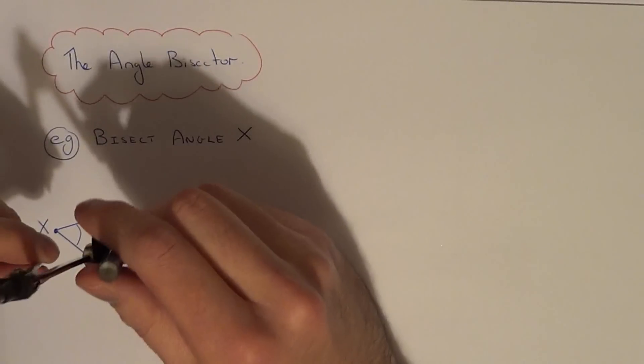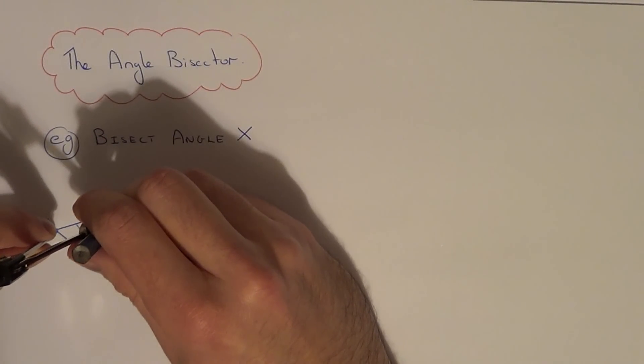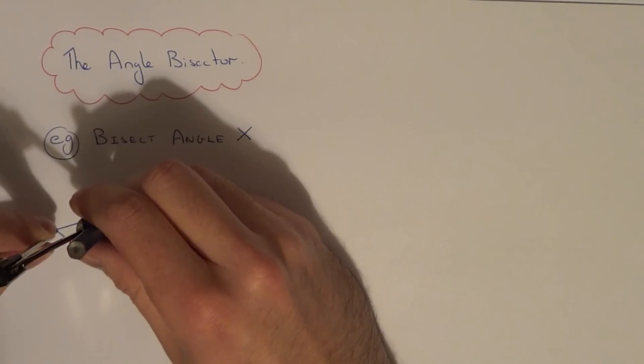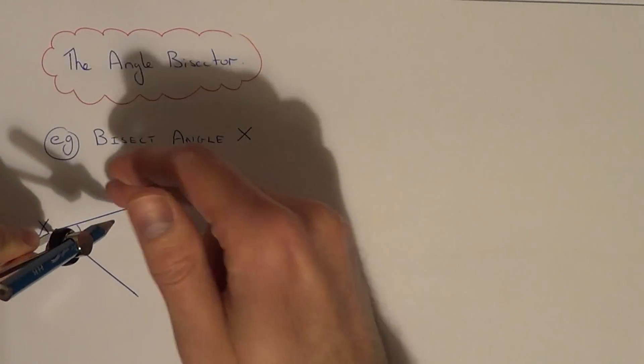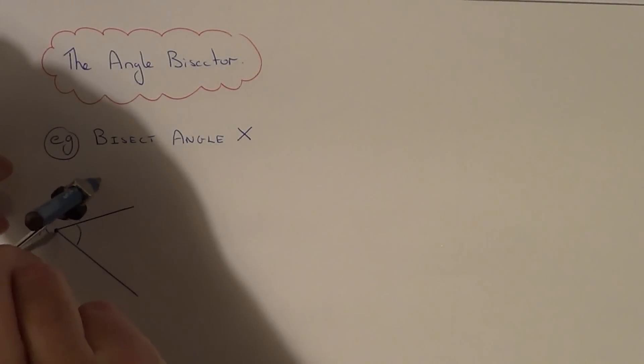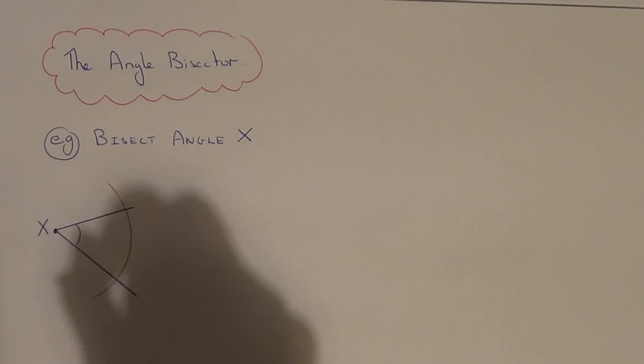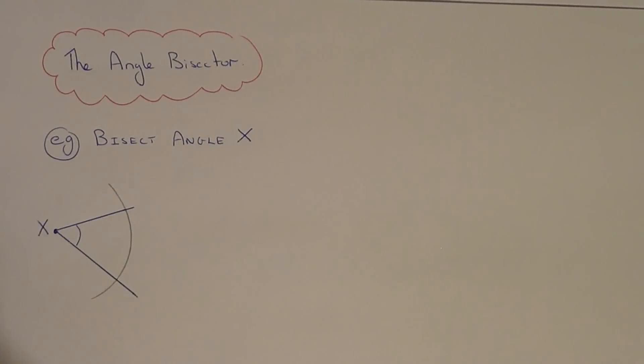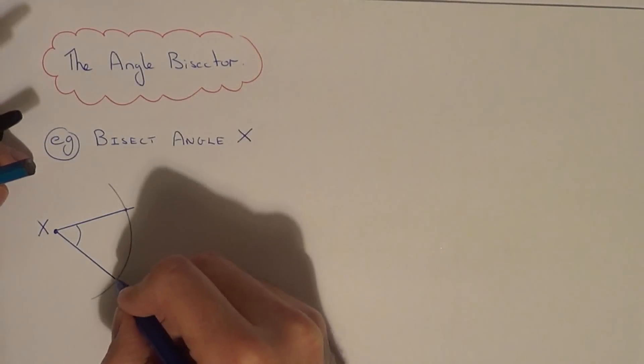So what you need to do is open your compass to about three quarters the length of the shorter line. Because your first arc must go across both lines of the angle. So let me do the arc. So as you can see, you get two new intersection points here and here.